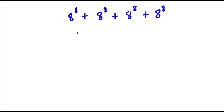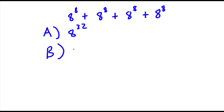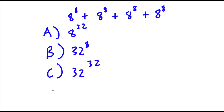Now, to solve this problem, I first have 4 answer choices. My first answer choice A is going to be 8 to the power of 32. My second answer choice B is going to be 32 to the power of 8. My third answer choice C is going to be 32 to the power of 32. And my final answer choice D is going to be 2 to the power of 26.